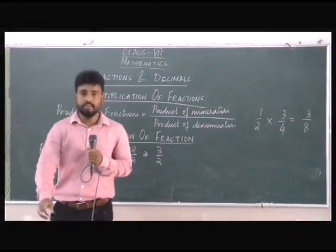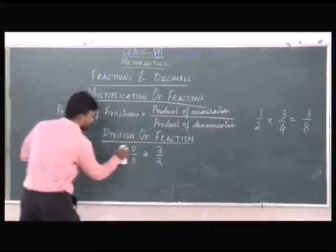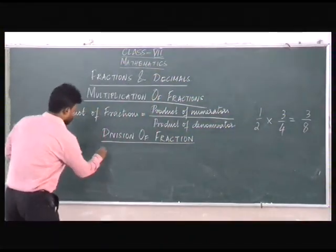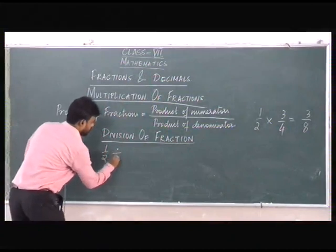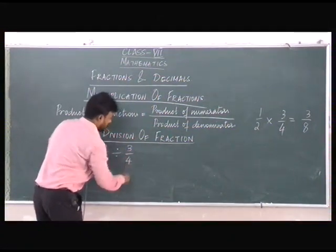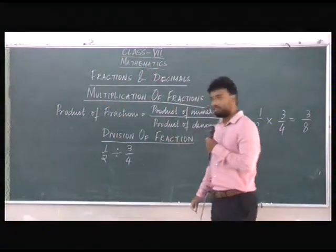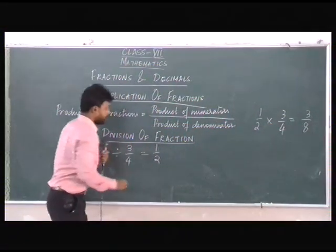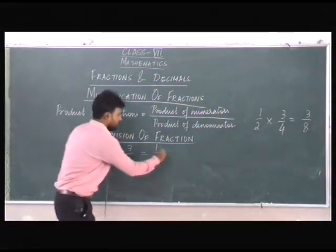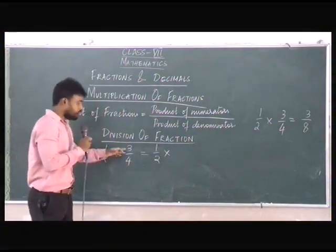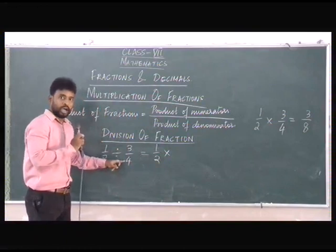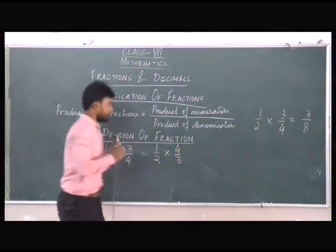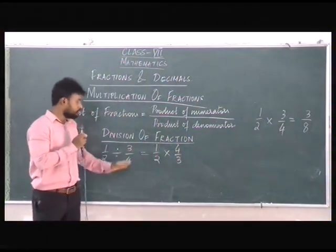Now let's come to division. Let's take up a fraction and understand how to divide. So we have 1 by 2 divided by 3 by 4. In this case, we'll write 1 by 2 here. Instead of division, we'll put a multiplication sign and find out the reciprocal of 3 by 4, which is 4 by 3.